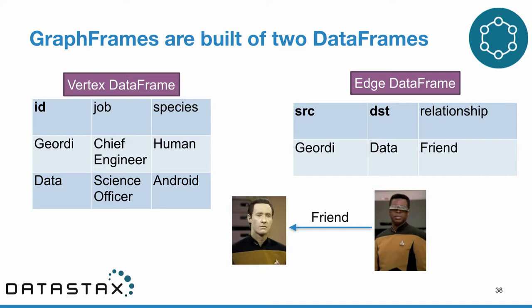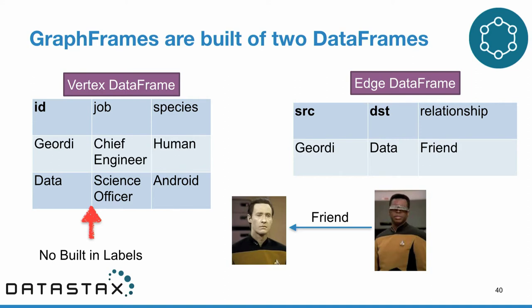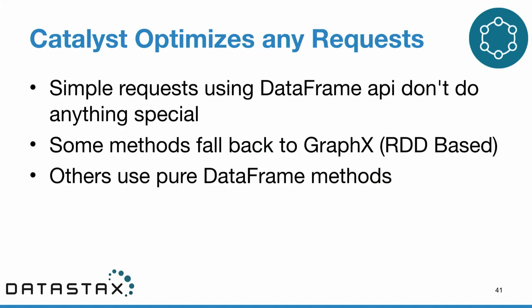In this example I have a tiny graph where Geordi and Data are linked by an edge with the property 'friend.' One thing different from TinkerPop: we're only allowed to use Spark SQL types — Catalyst-supported types only. We can't put arbitrary objects in columns because Catalyst can't optimize them. Also, there's no built-in concept of a label here, so if our vertex DataFrame has different types of vertices, we have to manually add a column to indicate that — for example, that Geordi is a crew member and not a spaceship.